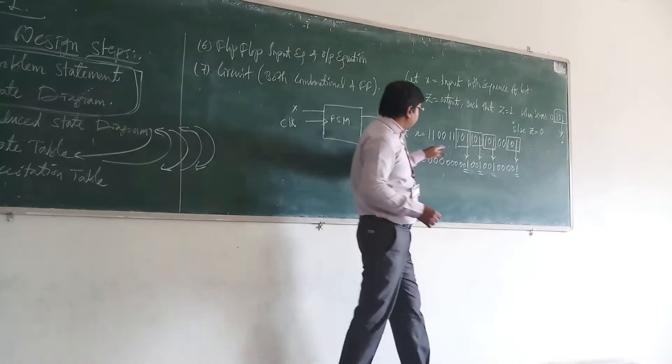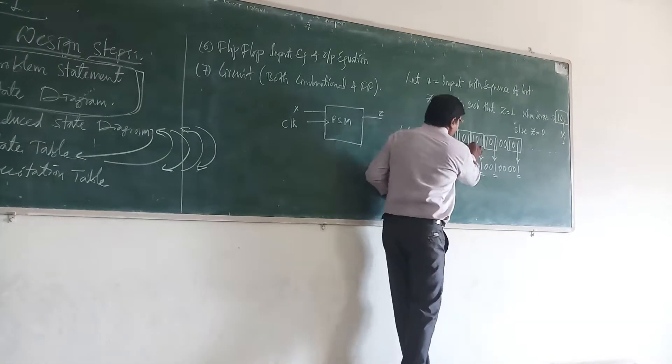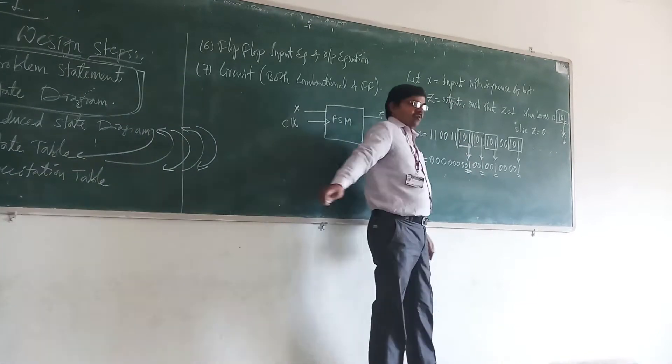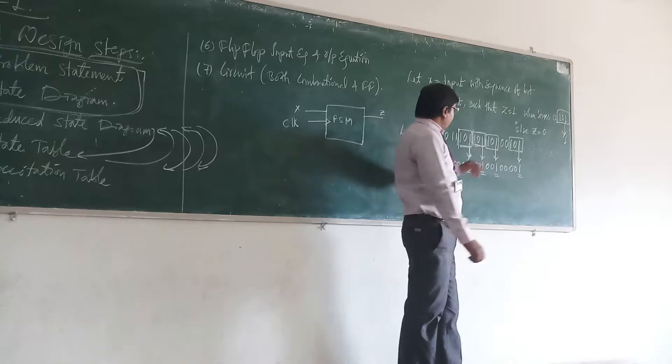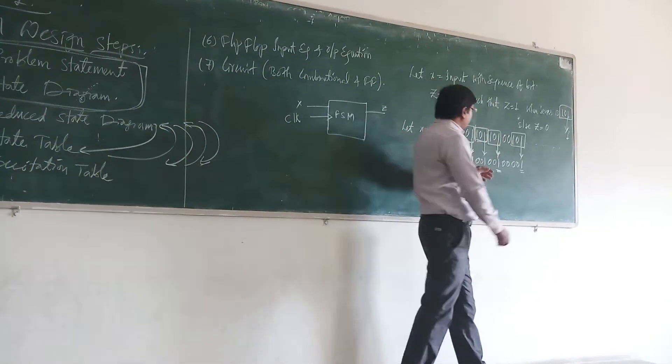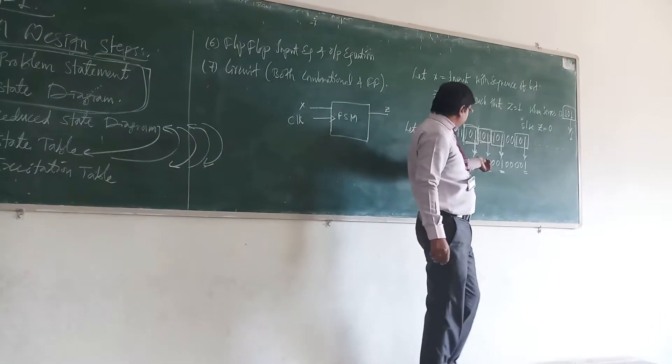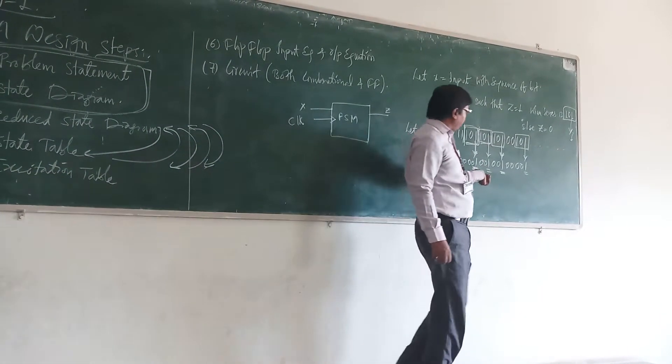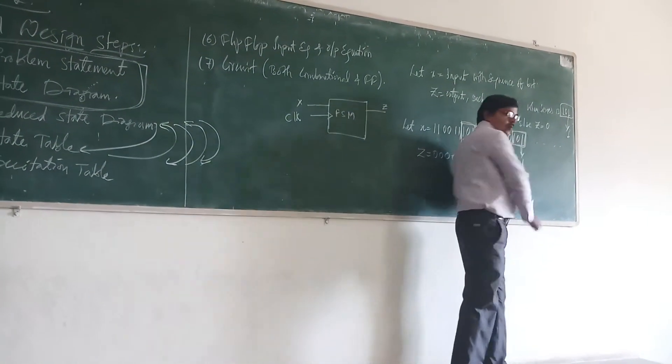The output: you see that here you have 101. So when you have 101, here at third bit, you will have 1. Here again you have 101, so at third bit, you will have 1. And here also same. So here you have 101, again you have 1. And finally, here you are seeing you have 101, here also you will have 1.